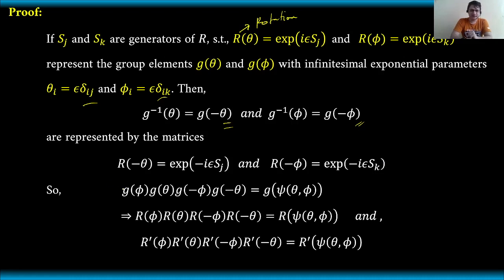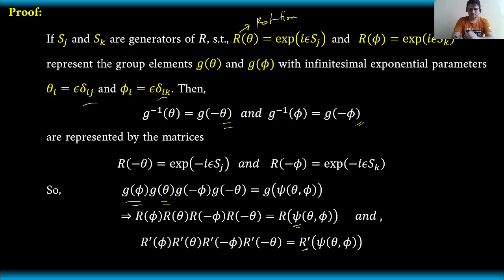If we multiply these group elements — G(phi) and G(theta) multiplied by their inverses — this can be written as a G functional, which is a function of psi, where psi is itself a function of theta and phi. Consequently, the matrices representing these group elements can be expressed as R functional, which is a function of psi — also a function of theta and phi — and the same holds for the primed ones, replacing R by R prime.